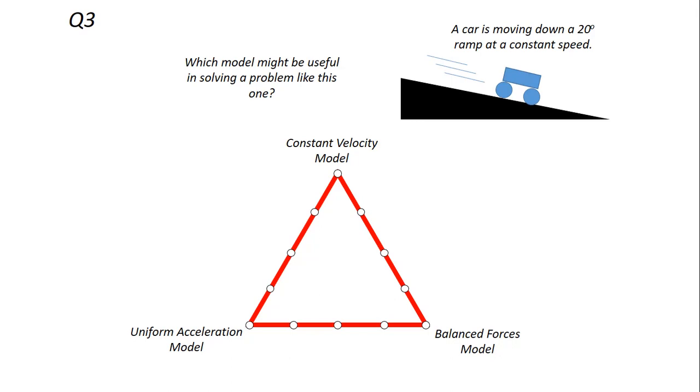Okay, which physics model might be useful to solving a problem like this one? So a car's moving down a 20-degree ramp at a constant speed. Which physics model might be useful to solve this one? Pause to think about it as I move on to question number four.